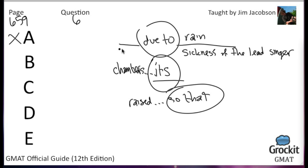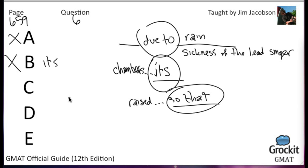Enough problems with choice A to eliminate it. Choice B has 'due to moisture' which I don't like — it's wordier than 'because' — and it still has 'its' again. 'Its' alone is enough reason to eliminate B. Choice B's end also has 'salt from the stone would crystallize and fungus was growing on the walls' — those two results of the humidity going up should be parallel. 'Would crystallize' and 'was growing' are not parallel, giving us another reason to eliminate B.